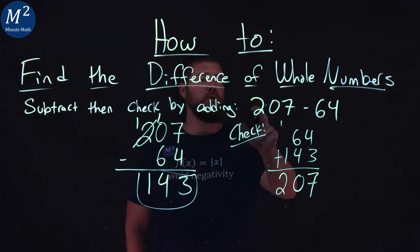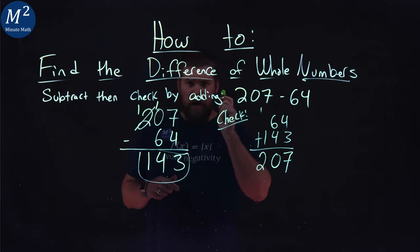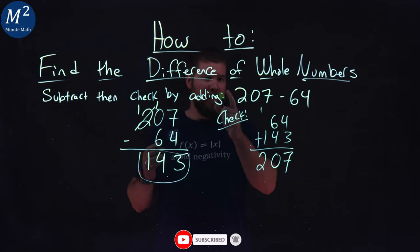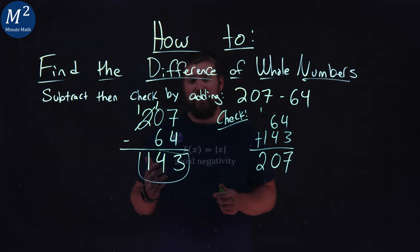So again, confirming 207 minus 64 is 143. I hope you learned something here on how to find the difference of whole numbers. If you did, make sure you subscribe to our YouTube channel and like this video. This helps us make more of these free math lessons for you and for everyone else. As always, thanks for watching.